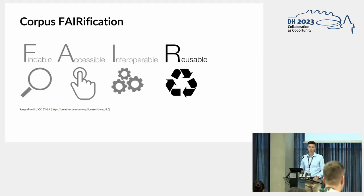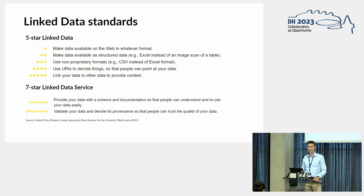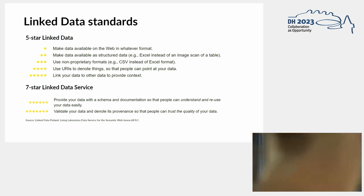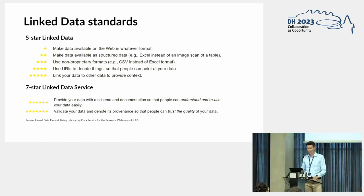The last part — Reusable — is of course the most important, because what we've noticed is that a literary corpus is very often a one-time gig: a researcher prepares the corpus, uses it, and no one else uses it, which is a pity. If you want to have a reusable corpus you also have to think about linked data standards. We all know the five-star linked data model, but we propose to add a sixth and seventh star. The sixth star means providing your data with a schema and documentation so people can understand and reuse it. The seventh means validating your data and denoting its provenance so that people can trust the quality.